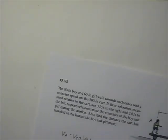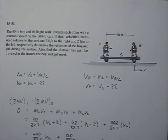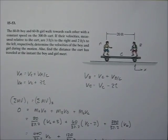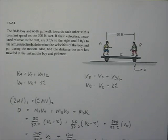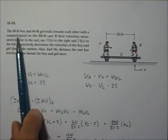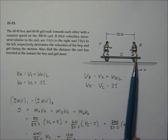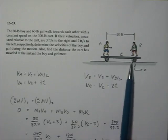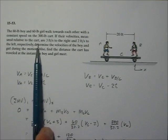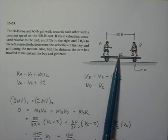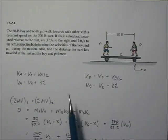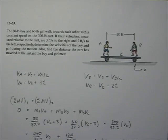Here's another problem — a three-particle rectilinear situation. We'll generally start with a relative equation. You can start with a momentum equation, but most often you have to use the relative equation eventually anyway. An 80-pound boy and a 60-pound girl are walking toward each other on a cart. The velocities are measured relative to the cart: the boy is walking 3 feet per second relative to the cart, the girl is walking 2 feet per second in the opposite direction relative to the cart.